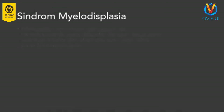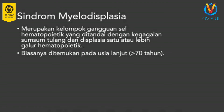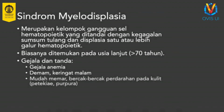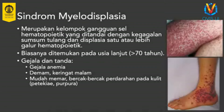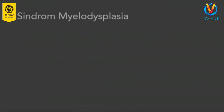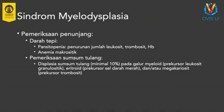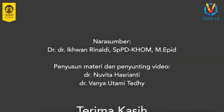Sindrom mielodisplasia merupakan kelompok gangguan sel hematopoietik yang ditandai dengan kegagalan sumsum tulang dan displasia satu atau lebih galur hematopoietik. Kondisi ini biasanya ditemukan pada usia lanjut, lebih dari 50% pasien berusia di atas 70 tahun. Gejala dan tanda pada sindrom mielodisplasia meliputi gejala anemia, demam, dan keringat malam. Selain itu, dapat pula ditemukan gejala perdarahan dan riwayat sering infeksi karena penurunan produksi sel darah putih. Riwayat paparan terhadap bahan kimia seperti benzena, riwayat kemoterapi, dan terapi radiasi dapat menjadi penyebab sindrom mielodisplasia sekunder. Pemeriksaan darah akan menunjukkan anemia makrositik dan dapat pula ditemukan pansitopenia. Diagnosis sindrom mielodisplasia ditegakkan melalui pemeriksaan sumsum tulang yang akan menunjukkan lebih dari 10% displasia pada galur eritroid, megakaryosit, dan atau mieloid.